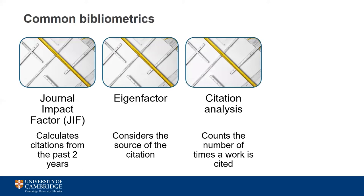Citation analysis is a simple count of the number of times a work, a researcher, journal title or department has been cited in the academic literature. It's a measure used to assess a wide range of outputs and is one of the easiest to understand. However, there's the potential for confusion over exactly which sources have been used in a count and whether there's any duplication. It's also a measure which lacks context — both in the tone of the citation and the discipline. For example, a citation count of 10 might be seen as high in one discipline but low in another.